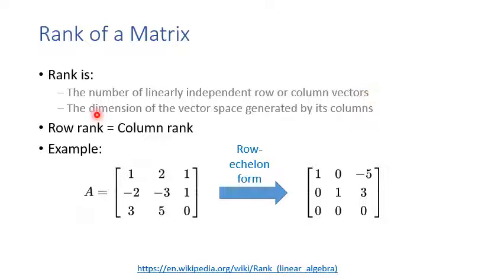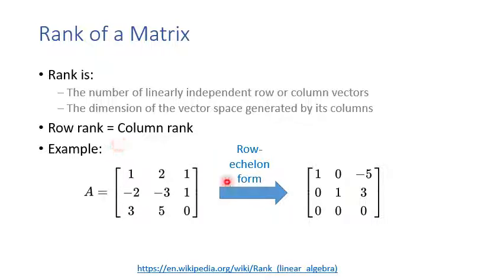We also want to know how many independent row or column vectors are in a matrix — this is called the rank. The rank is the number of linearly independent row or column vectors in a matrix. If we know the rank, we can determine the dimension of the vector space generated by the matrix columns. Note that row rank equals column rank.